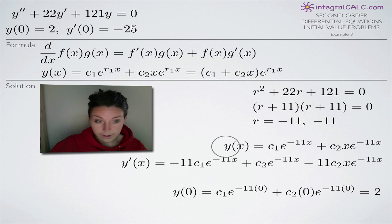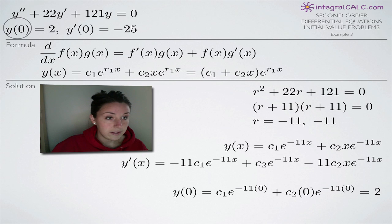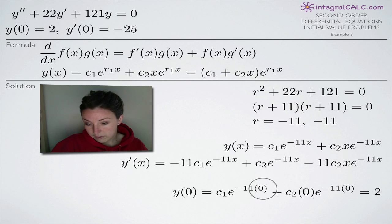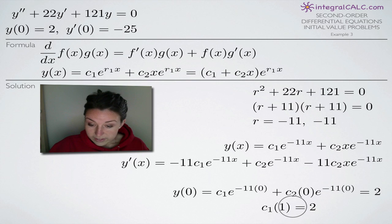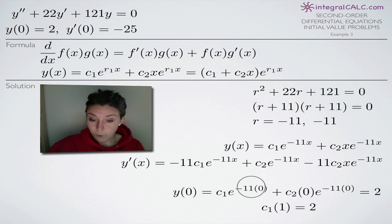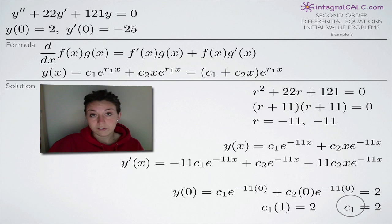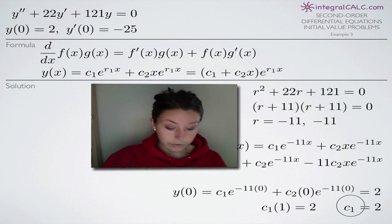Now we plug in our initial conditions. For y(x) we apply y(0) = 2, substituting 0 for x throughout and setting the equation equal to 2. Simplifying — remembering that e^0 = 1 and the second term disappears because it's multiplied by 0 — we get c₁ · 1 = 2. So c₁ = 2.